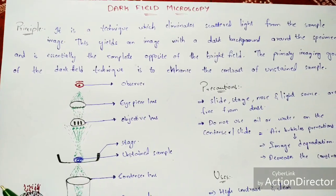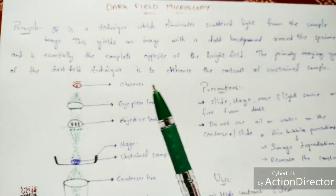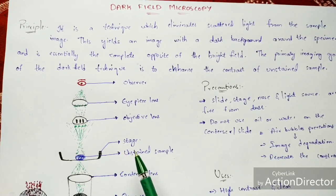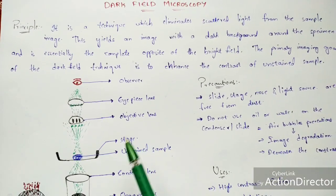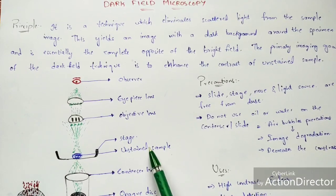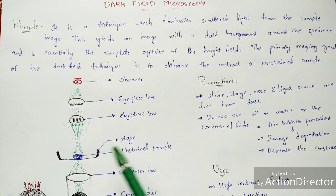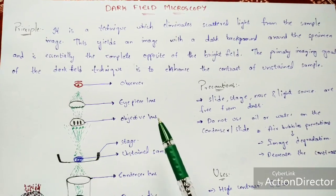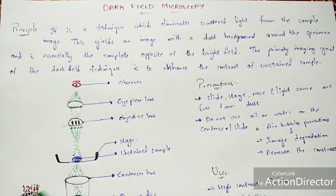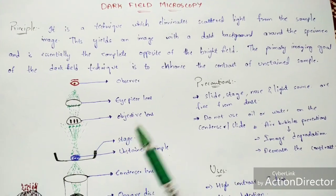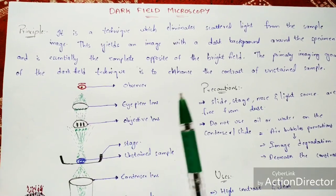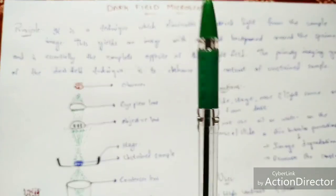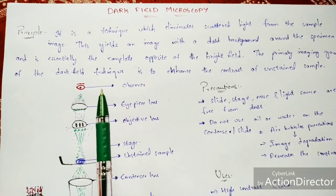In bright field microscopy we use stained samples, but in dark field microscopy we use unstained samples. An unstained sample is one that has not been through the staining process — the organism has not been killed. In bright field microscopy, the stained organism becomes a specimen, meaning it is dead. So in dark field microscopy we use unstained, living samples directly.